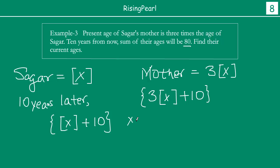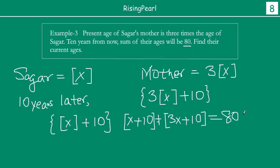So our equation: 10 years later, Sagar's age is x plus 10, plus Sagar's mother's age is 3x plus 10, and if you add both of them you get 80. You need to collect like terms — x plus 3x is 4x, and 10 plus 10 is 20, equal to 80. This is our linear equation.